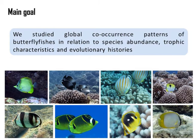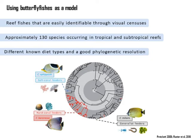Here we studied the global co-occurrence patterns of butterfly fishes in relation to species abundance, trophic characteristics and evolutionary histories. The Chaetodontidae family is composed of reef fishes that are easily identifiable through visual censuses. There are approximately 130 species occurring in tropical and subtropical reefs. This family also has different known diet types and good phylogenetic resolution.